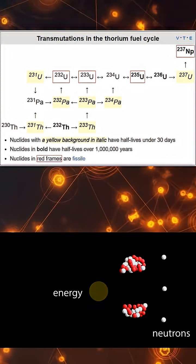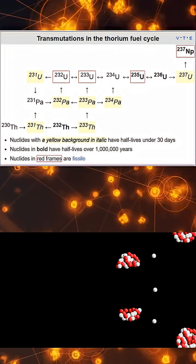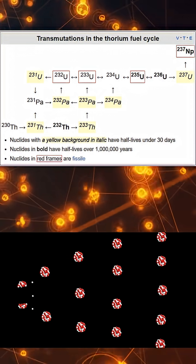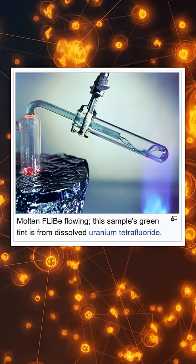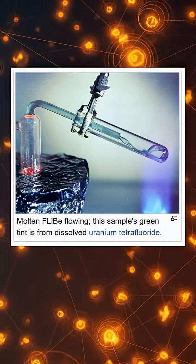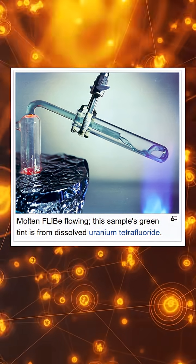Unlike conventional nuclear plants that rely on solid fuel rods and high-pressure water cooling, this reactor uses liquid nuclear fuel. Uranium and thorium are dissolved directly into molten fluoride salts, which act as both the fuel and the coolant. These salts circulate at high temperature but near atmospheric pressure, eliminating the risk of pressure-driven accidents.